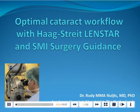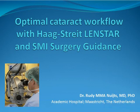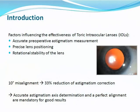In combination with the Hakeshaw, there are some factors influencing the effectiveness of toric intraocular lenses. You have to place them accurately, you have to measure the preoperative astigmatism accurately, and there is the issue of rotational stability of the lens. If there is a certain amount of misalignment, you will lose some of the correction of the astigmatism. So accurate astigmatism axis determination and alignment is mandatory for a good result.